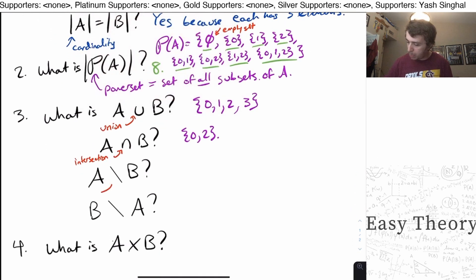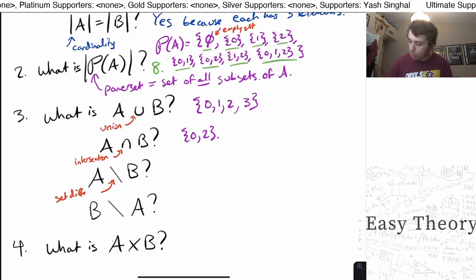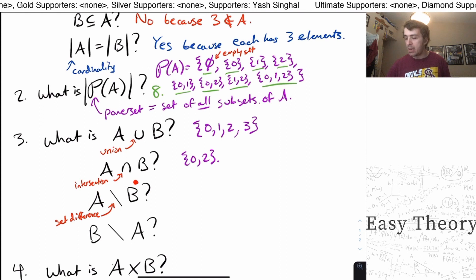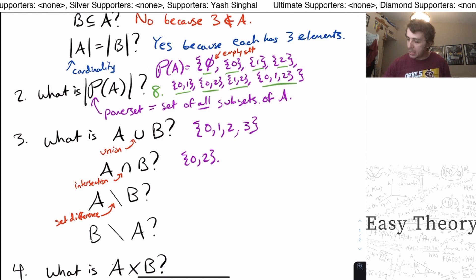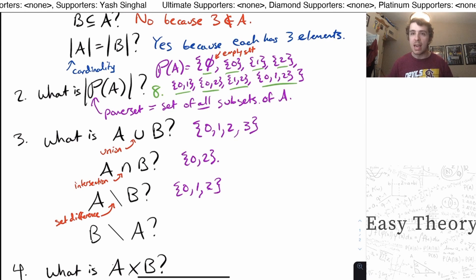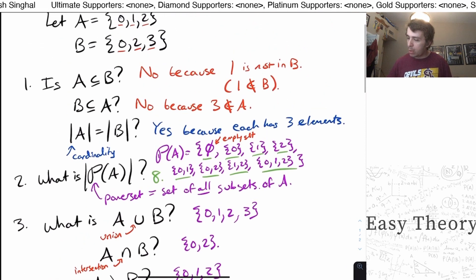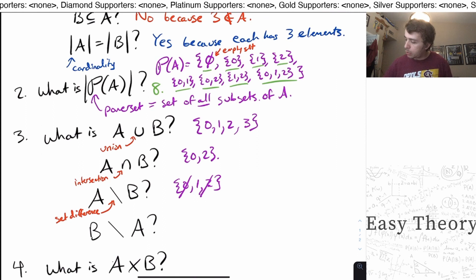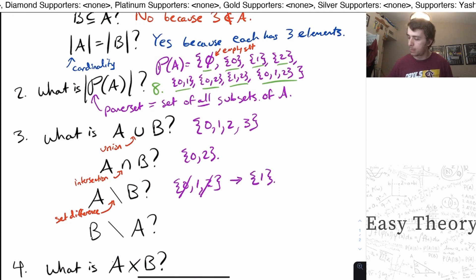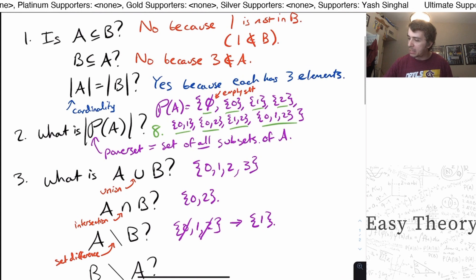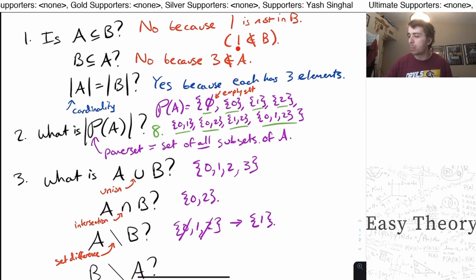This symbol is called set difference. Set difference A minus B means everything in A but not in B. We write down the things in A: 0, 1, 2, and take away anything that is also in B. Zero and two are also in B, so we remove them. We end up with the set {1} — everything in A that is not in B.